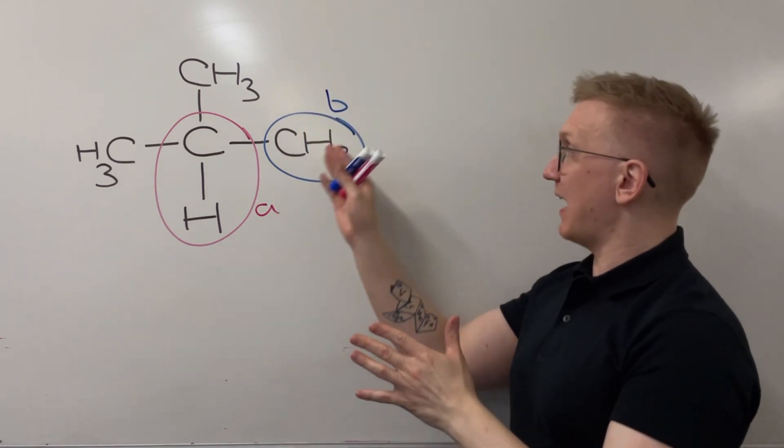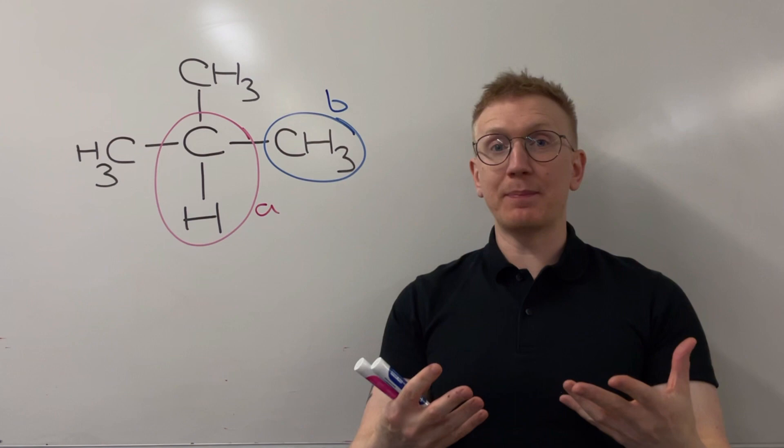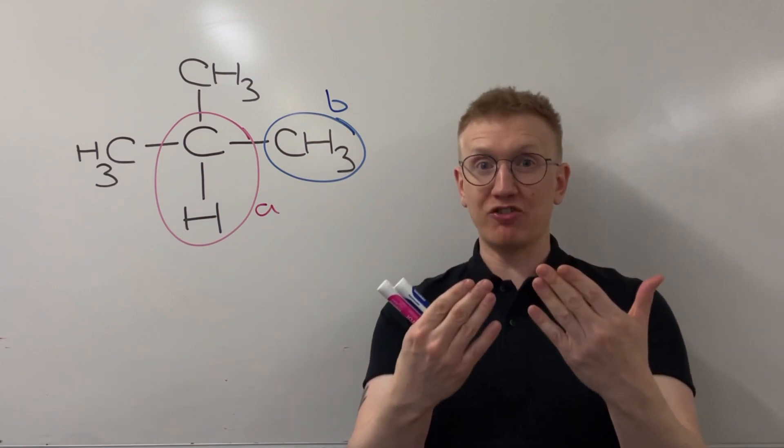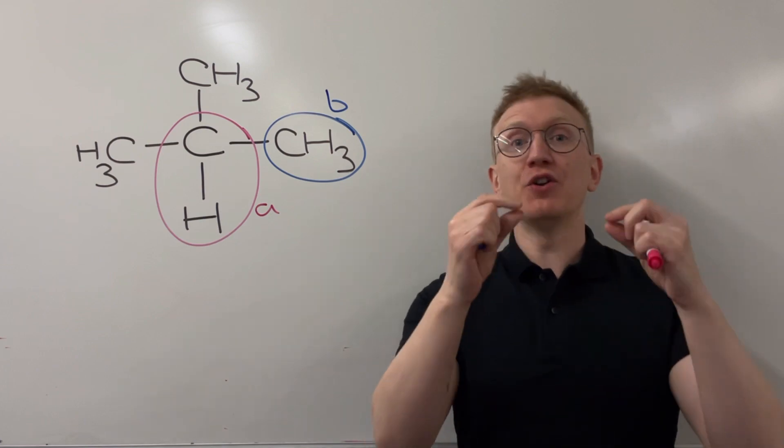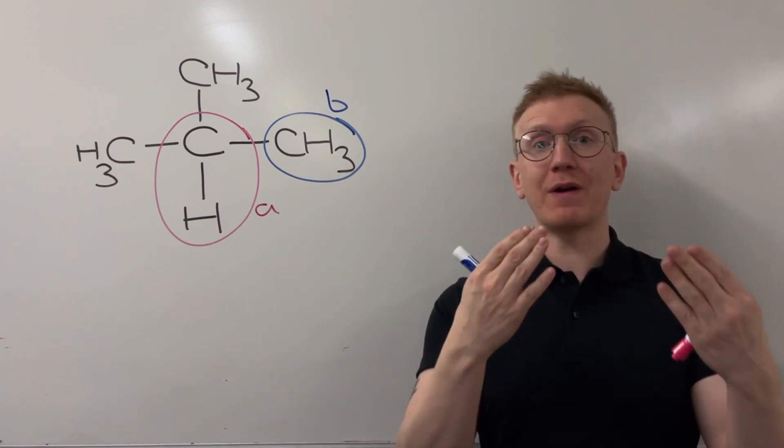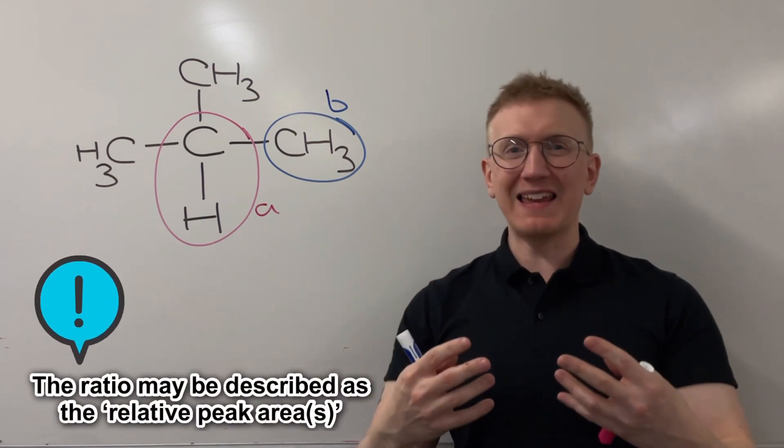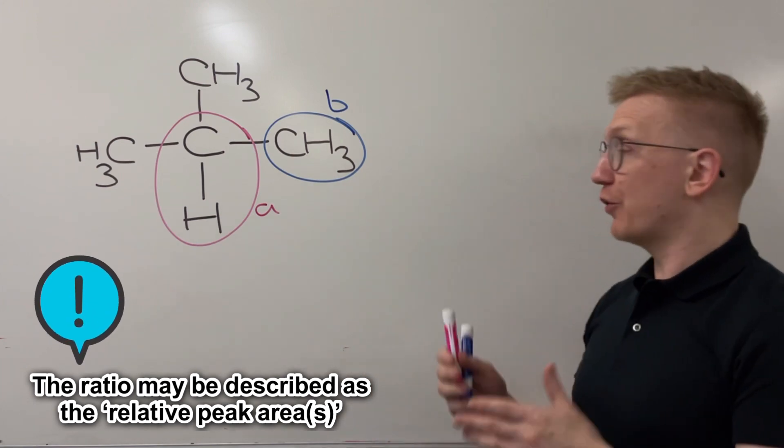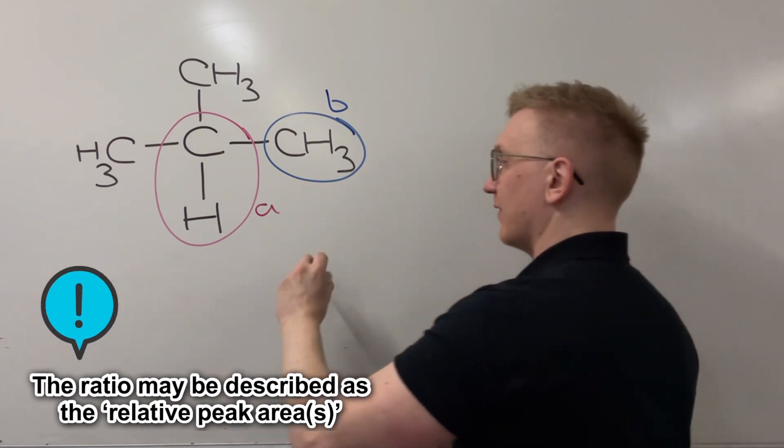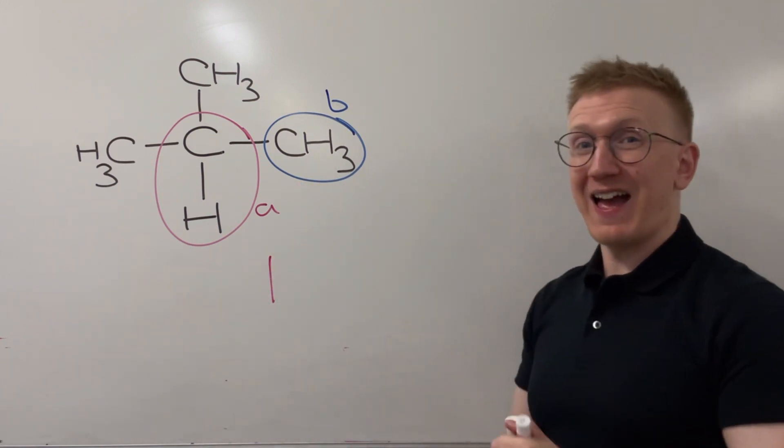Now my two peaks, peak A and peak B, need to be presented as being in a ratio to each other. We would expect to see this on an A-level exam paper with the numbers next to the peaks that tells you what the ratio is. Loosely it's the number of hydrogens within the environment. So the ratio here between these two peaks is going to be one for A because there's one H within that environment.